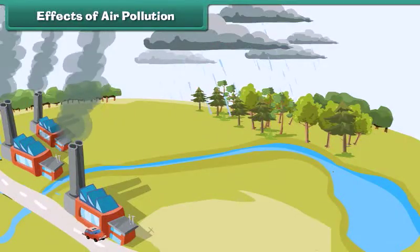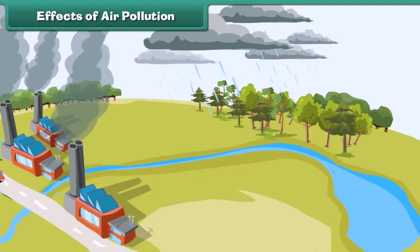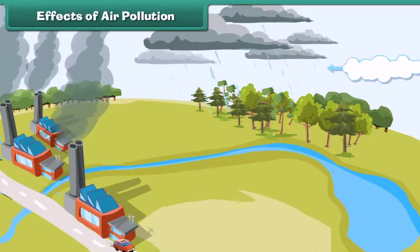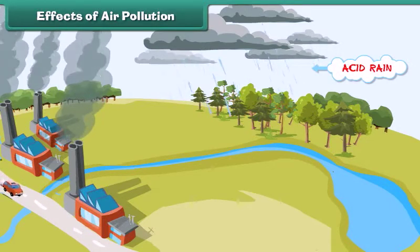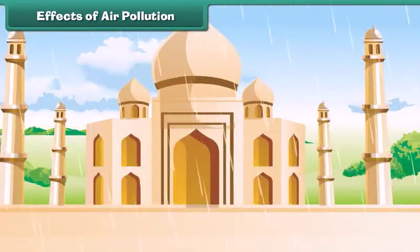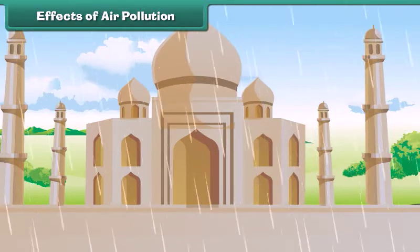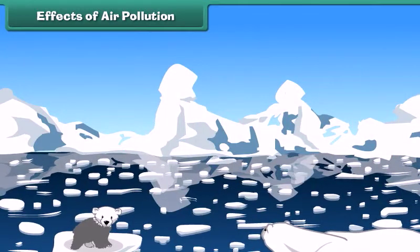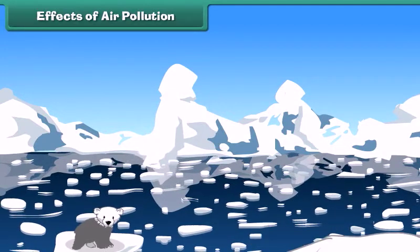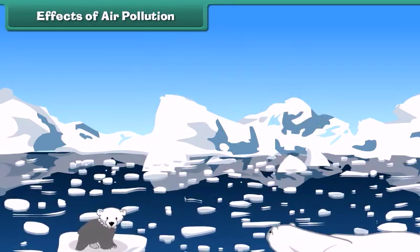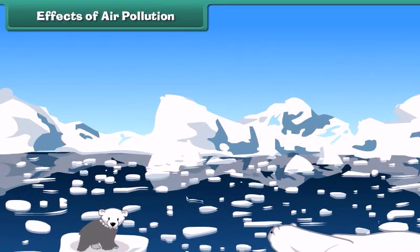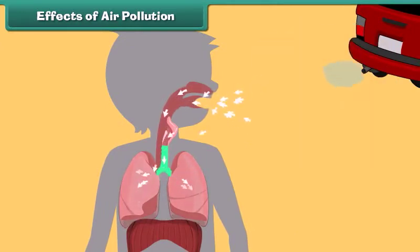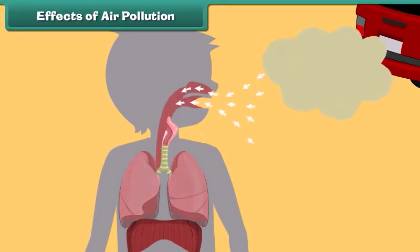This polluted air mixes with clouds in the atmosphere and brings harmful rain, also known as acid rain. Acid rain damages our buildings and monuments. Besides this, large amounts of carbon dioxide in the air increase global temperatures, which subsequently results in the melting of glaciers. It adversely affects our lungs and we suffer from respiratory disorders.